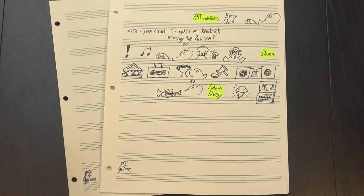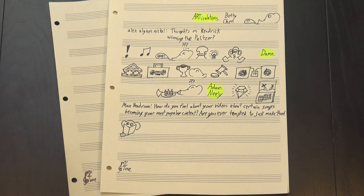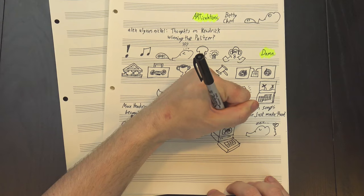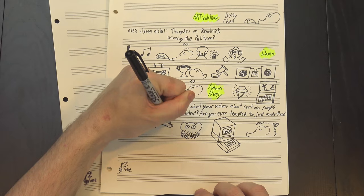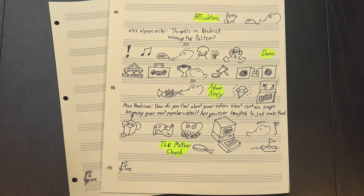Max Headroom asked, how do you feel about your videos about certain songs becoming your most popular content? Are you ever tempted to just make those? Honestly, I'm torn. I love making the analysis videos and I'm really glad they do well, but I have often wondered if the channel might grow faster if I stopped doing everything else and just published one analysis per month. The algorithm would certainly like me more, but I don't think I'd be able to do it. I really enjoy the more obscure, weird stuff that I talk about in between, and making 12tone would be a lot less fun if I didn't get to explore those ideas too. I like the way the analysis videos work as flagship content to pull people in so I can trick them into learning about things like all interval 12tone rows, and I think doing both is a big part of what makes this channel work.